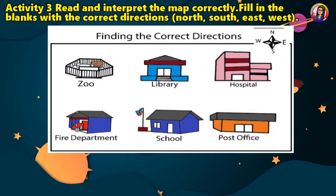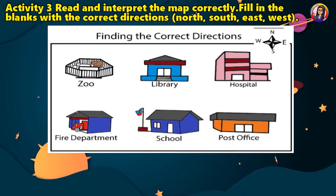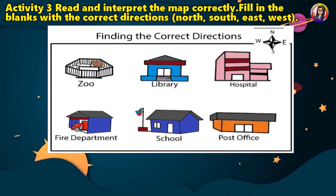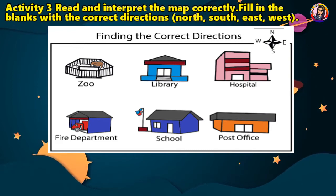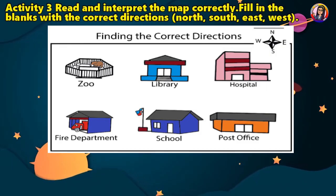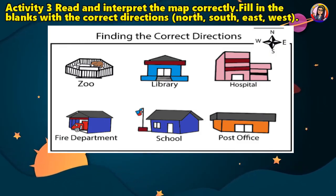Let us have another activity. Read and interpret the map correctly. Fill in the blanks with the correct directions: North, South, East, West. Write the correct answer on a separate sheet of paper.